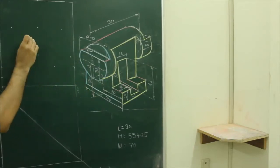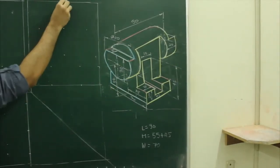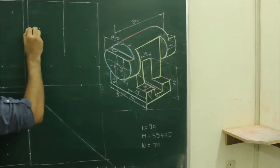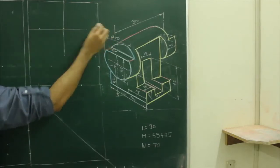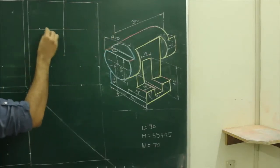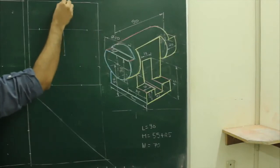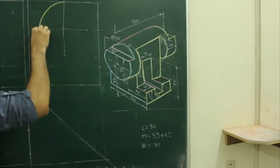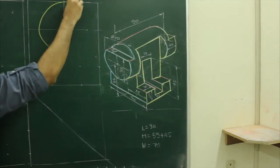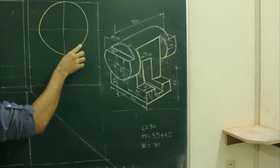In this case, first we will find out the center, and then we will draw a circle of radius 25.